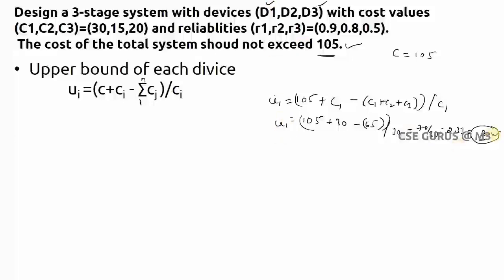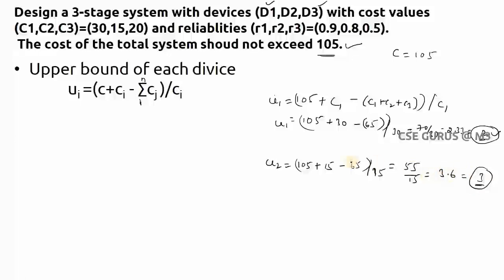For u2: (105 + 15 - 65) / 15 = 55 / 15 ≈ 3.6, rounded down to 3. So u2 = 3 — we can take at most three copies of the second device. For u3: (105 + 20 - 65) / 20 = 60 / 20 = 3 exactly, so u3 = 3 — at most three copies of the third device.